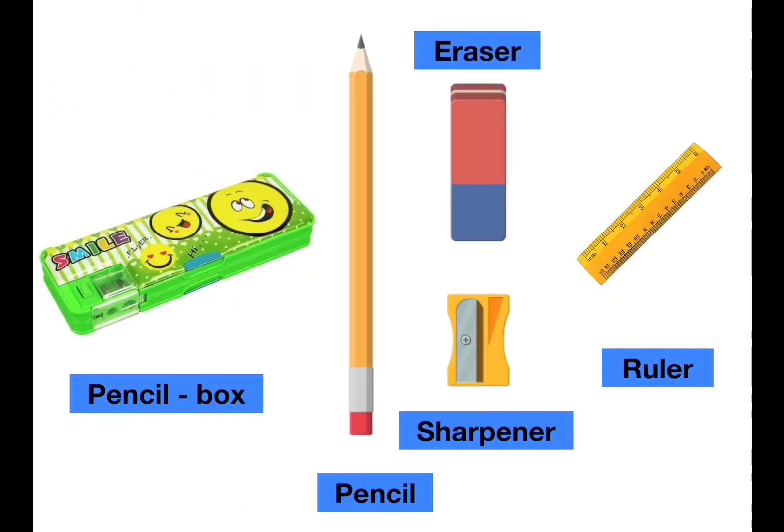Pencil box - Pencil, eraser, sharpener, ruler. We should always carry the pencil box to school. We use the pencil to write. Eraser is used to erase. And sharpener is used to sharpen pencils. And a ruler is used to make lines.